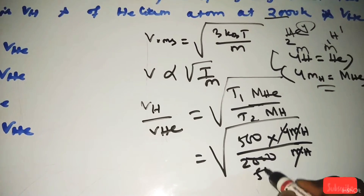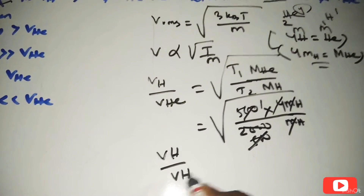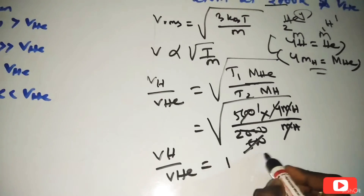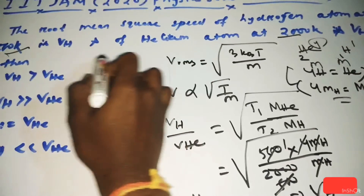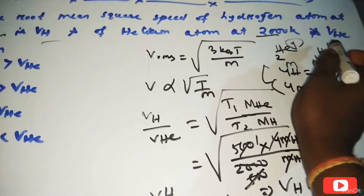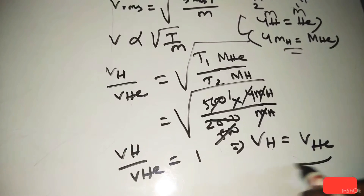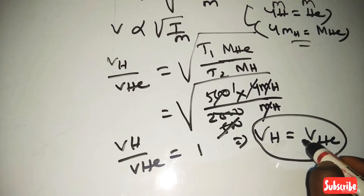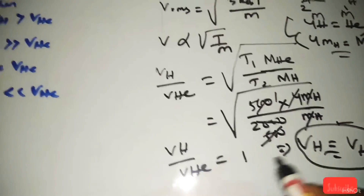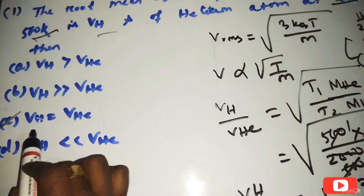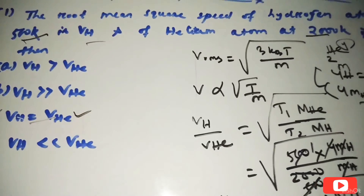So VH by V_helium equals 1. VH means root mean square velocity of hydrogen, and V_helium means root mean square velocity of helium. Therefore VH equals V_helium — root mean square velocity of hydrogen equals root mean square velocity of helium atom. So VH = VHe. This is the right answer — option C is the correct answer. Mark option C.